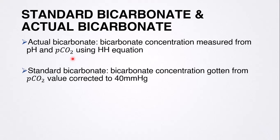The next definition is standard bicarbonate. Standard bicarbonate is the bicarbonate concentration obtained when the partial pressure of carbon dioxide is corrected to 40 mmHg. The normal average value of partial pressure of carbon dioxide in blood is 40 mmHg. To calculate standard bicarbonate, regardless of what the actual pCO2 value is in a patient's blood, we substitute 40 mmHg into the Henderson-Hasselbalch equation and solve.